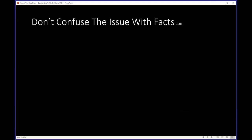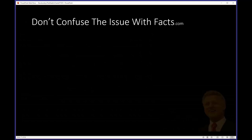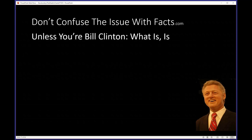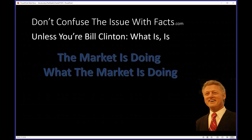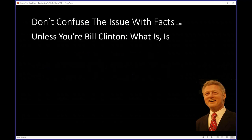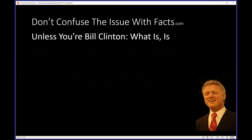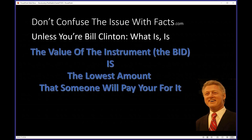As I preach: what is, is. The market is doing what the market is doing. You may not want it to be doing what it's doing, and more often than not, you won't. The price of the instrument — the ask — is the lowest amount someone will sell it to you. And the bid is the highest amount someone will pay you for it. You might not like it, and chances are, statistically, you won't.